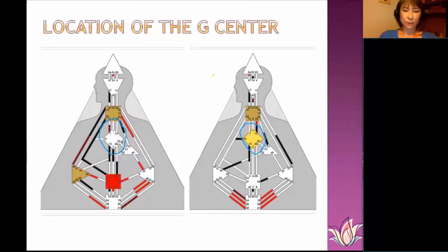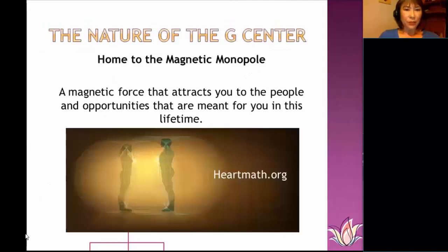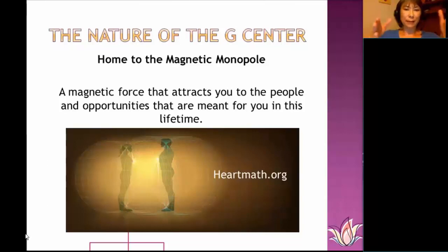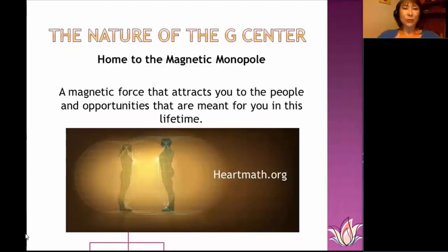The G Center — that diamond on your body graph — is home to the magnetic monopole. If you think of a typical magnet having a positive and a negative charge, the magnetic monopole is a magnet that only has one charge. It's a magnetic force that attracts things to you — people, opportunities — or attracts you to the people and opportunities you're meant to meet and experience in this lifetime.